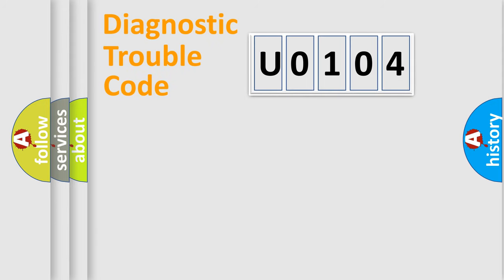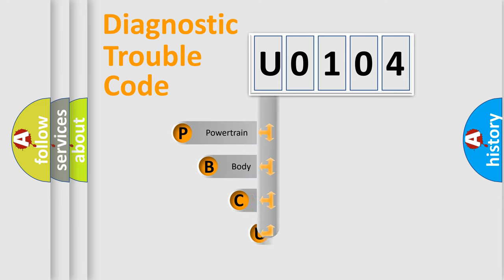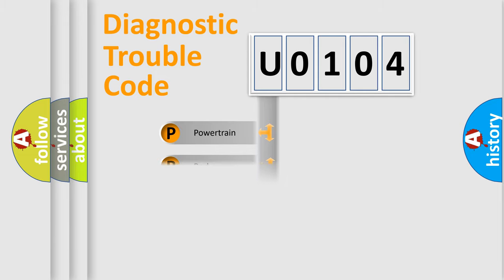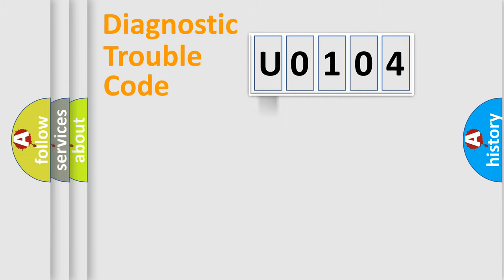Let's do this. First, let's look at the history of diagnostic fault code composition according to the OBD2 protocol, which is unified for all automakers since 2000. We divide the electric system of the automobile into four basic units: Powertrain, body, chassis, and network.